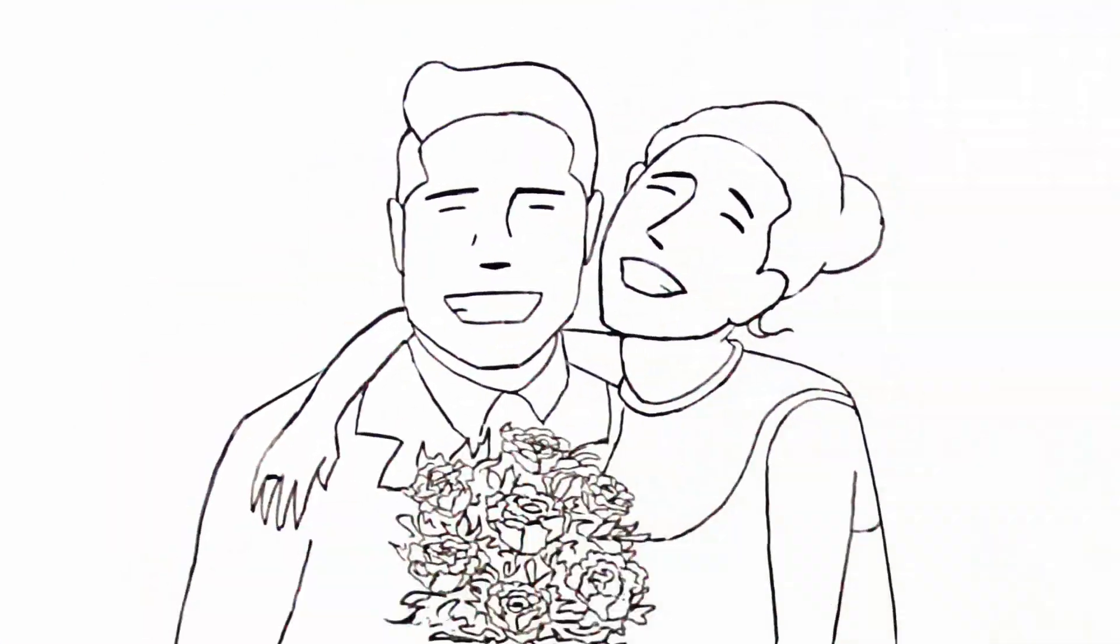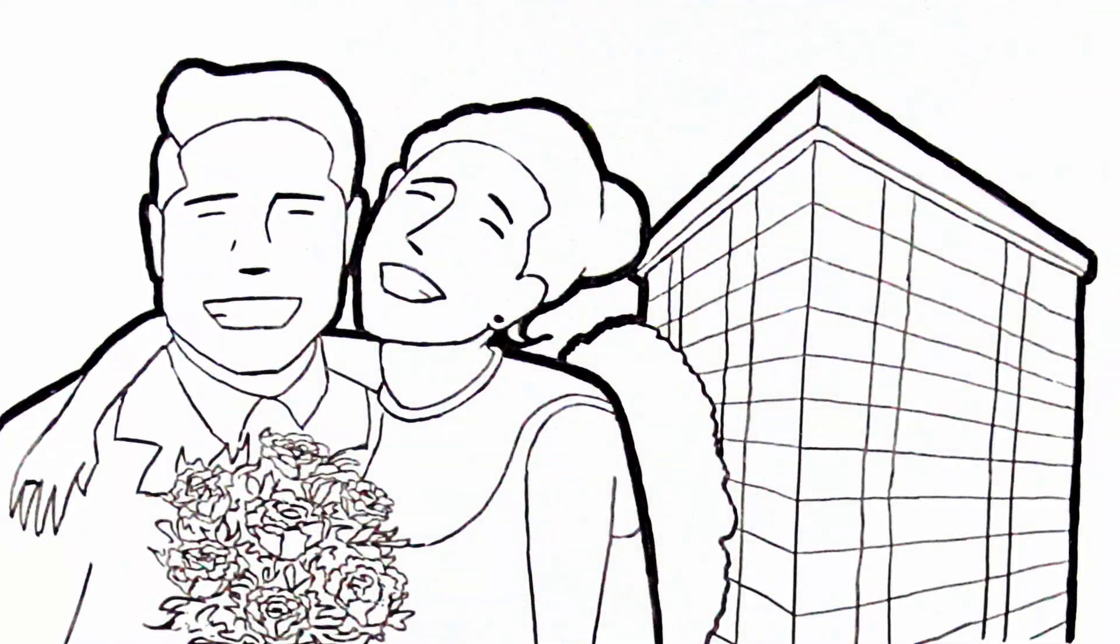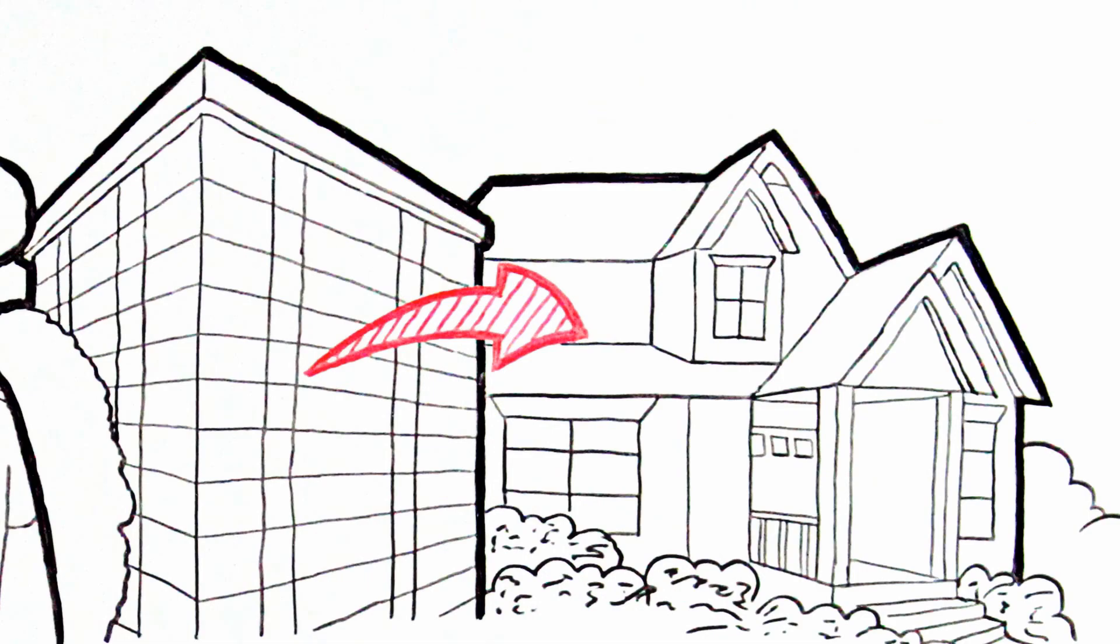Take Emily and Dan for example. The recently married couple is planning to move out of their apartment in downtown Vancouver to the new home that they just purchased in South Surrey.